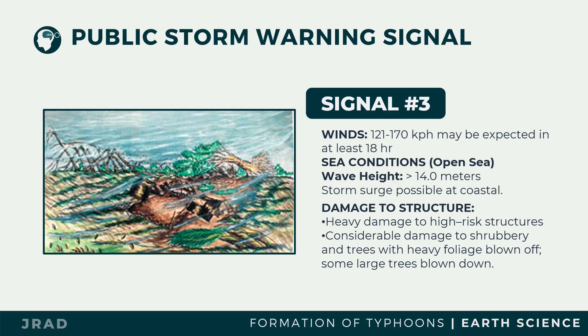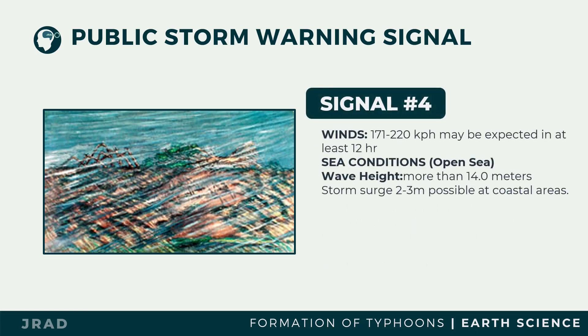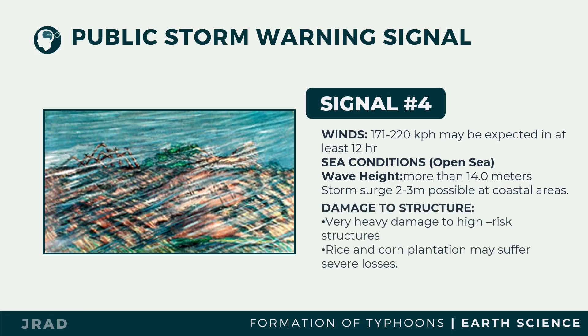Tropical Cyclone Wind Signal Number Four: winds of 171 to 220 kilometers per hour may be expected in at least 12 hours. Signal Number Four brings very heavy damage to high-risk structures, moderate damage to low-risk structures, and considerable damage to structures of light materials. Complete roof structure failures occur. A few first-class houses are partially damaged. There is almost total damage to banana plantations, and rice and corn plantations may suffer severe losses.